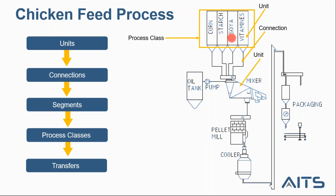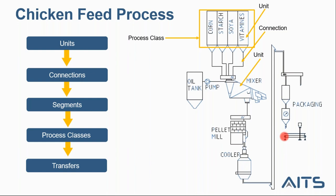The four raw materials are corn, starch, soya, and vitamins. These four raw materials will be processed in the mixer, where oil will be pumped. After that, they will be transferred into the pellet mill, where they will be heated, pressed, and then cooled, and finally to the packaging area.